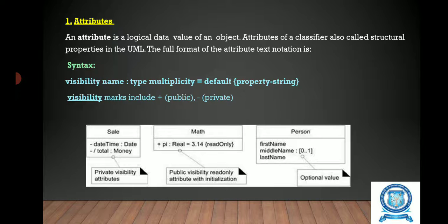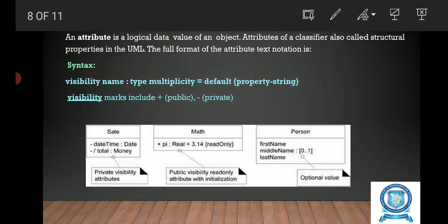This diagram shows various classes like sale, math, and person. The sale class has the attributes date, time, and money. Since they are private, it is depicted as minus. In this class diagram, the first name, middle name, and last name are their attributes. And in this math class, the plus sign represents public.